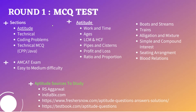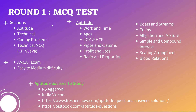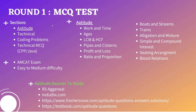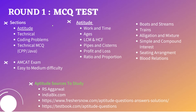In the round one MCQ test, the first section is aptitude. I have mentioned the basic topics you should prepare — go through all these topics and solve around 15 questions for each. Solve a variety of problems in the order of importance I've listed. You can refer to R.S. Agarwal, IndiaBix.com, and FresherNow.com for current questions. For a mock aptitude test, you can go to TestBook.com.